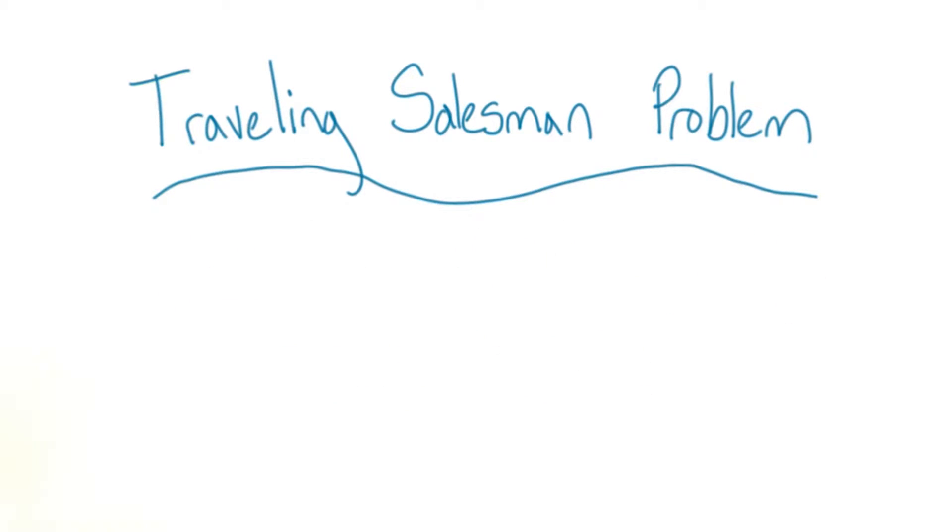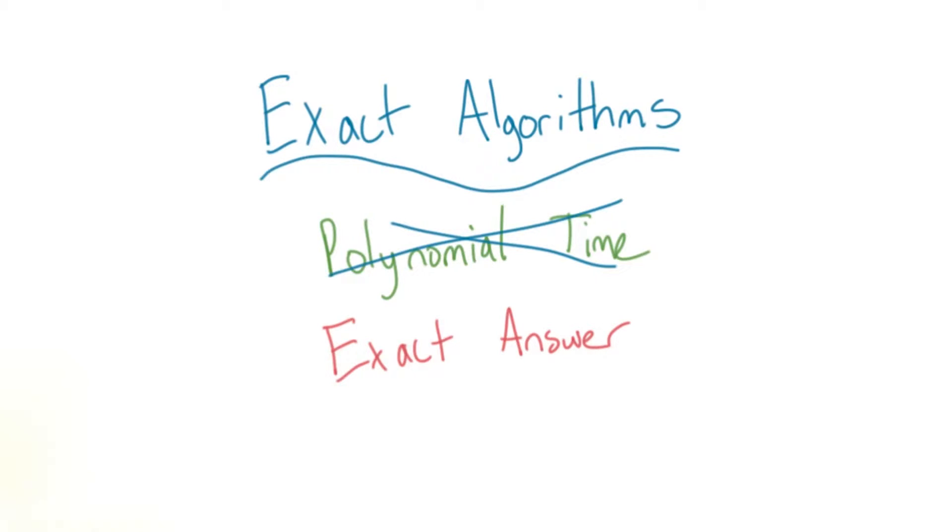Since the problem is so difficult, there are two classes of algorithms considered solutions. The first are exact algorithms, which don't happen in polynomial time, but will get us the correct answer.